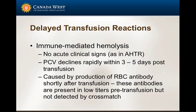Delayed transfusion reactions are immune-mediated hemolysis that are not acute. They're usually seen three to five days after the transfusion. You'll see the animal's packed cell volume come up and then start to decline over the next few days. This is usually caused by production of red cell antibodies that were already circulating pre-transfusion but not at a level high enough to identify in a cross-match.